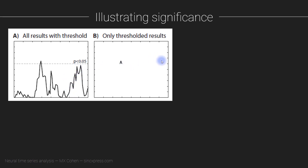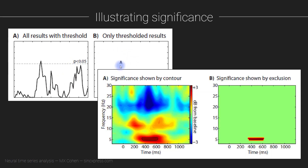Furthermore, it could be that this effect has high theoretical relevance — even if it's not statistically significant, it may be important for whatever theory we are working with. And again, when we blank out the data, we have no idea what's going on below the threshold. So this is a much better way to show data. Likewise, we can have time frequency plots and indicate statistical significance by drawing contour lines around significant regions like what you see here.